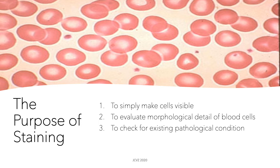Some stains are able to color different parts of the cell so that the morphological detail of each blood cell is seen. And because we can make out the morphological detail, we can also differentiate one blood cell from another.